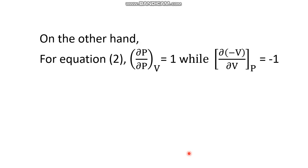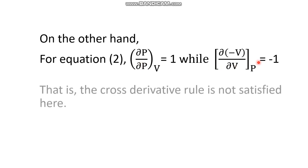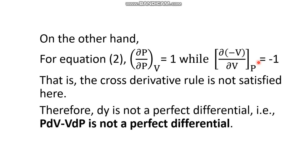For the second equation, del M by del y at constant x is 1, as before. But for del N by del x at constant y, N and x are not the same — they have the same variable but opposite signs. So the result of differentiation is minus 1. These two are not equal, so the cross derivative rule is not satisfied. As a result, pdV minus Vdp is not a perfect differential.